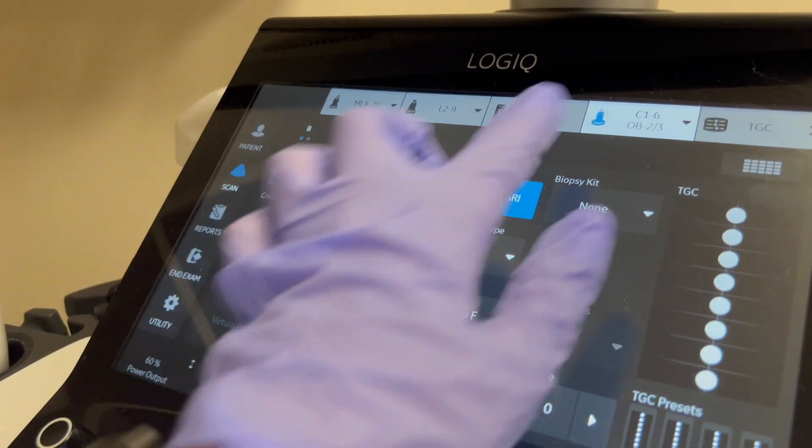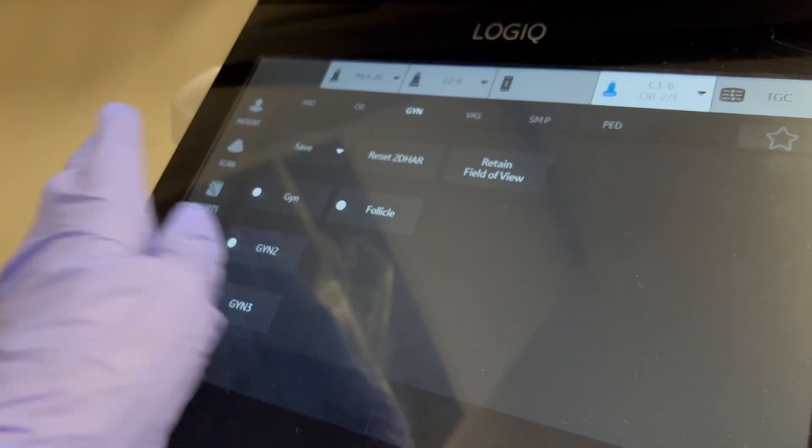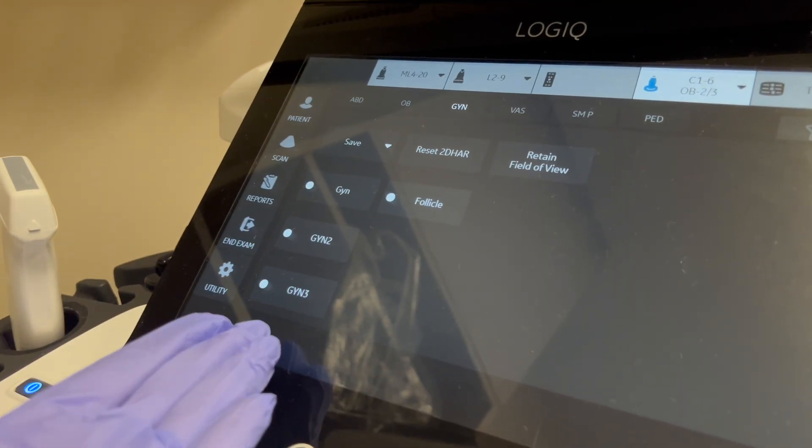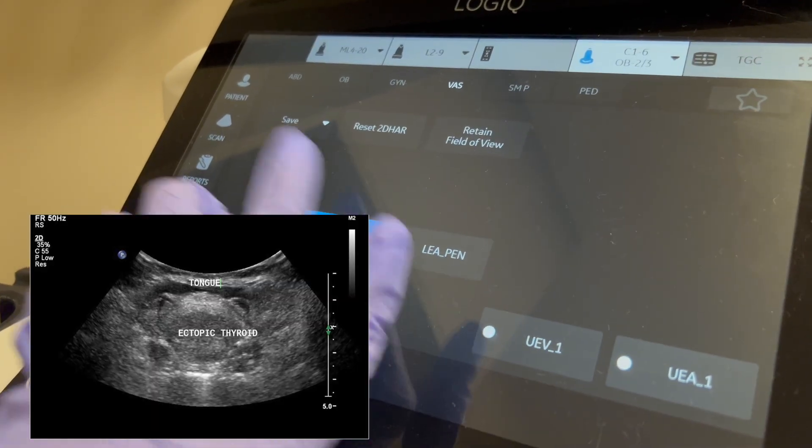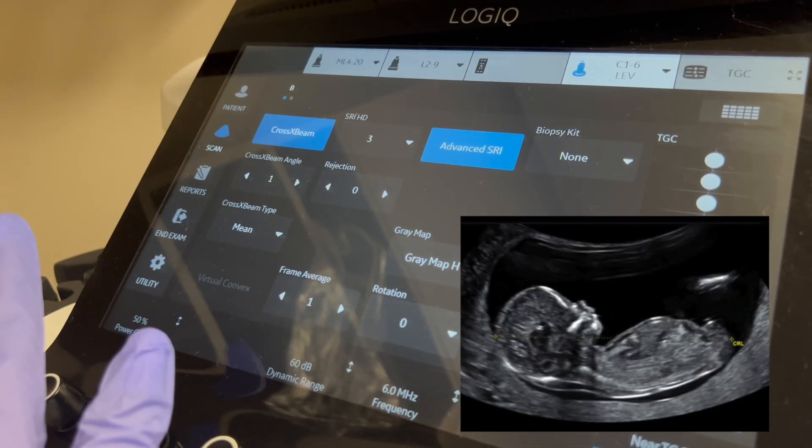You can use both of these probes to also scan transabdominal pelvics to see ovaries, or even thyroids on larger necks. These probes are meant for deeper penetration.